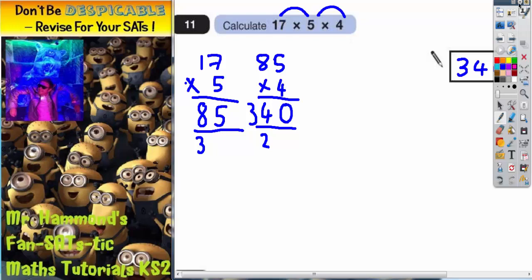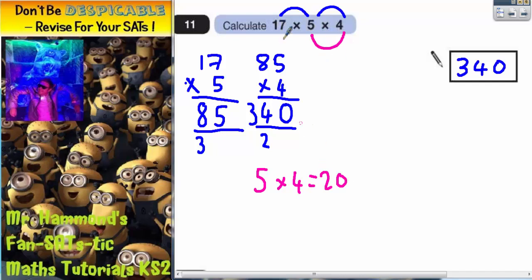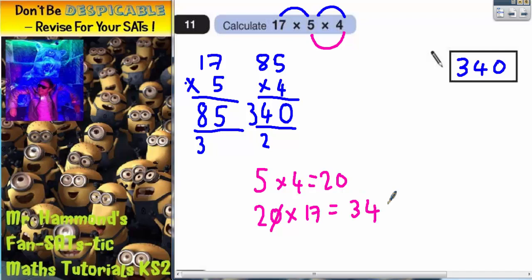However, it would be a shame to leave it there. We have actually answered the question now, but we're just going to prove that it doesn't matter which way round you do it. We could have done 5 times 4 first — 5 times 4 is 20. And now times 20 by 17. 20 times 17 sounds difficult, but it's really easy: cover up the 0 and do 2 times 17. 2 times 17 is 34, then just put that 0 back on — you get 340, which is exactly what we got.